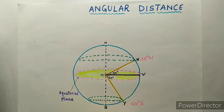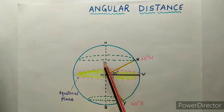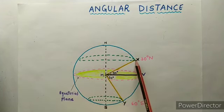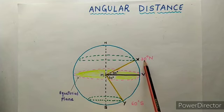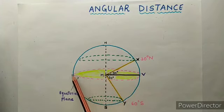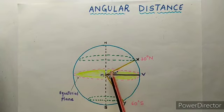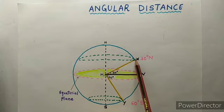Now the question is why we made these two angles on the globe. The reason is that with the help of these angles we are going to make a latitude on the globe. We will name this latitude as 30 degrees north, because this latitude is at 30 degrees and the upper part is called the northern hemisphere and the lower part is called the southern hemisphere. The latitude drawn at this angle of 30 degrees will be called 30 degree north latitude.